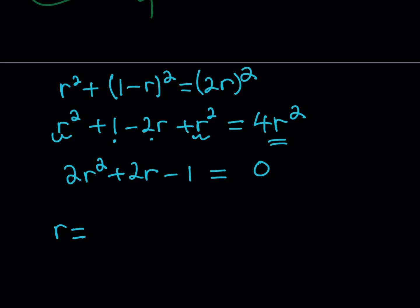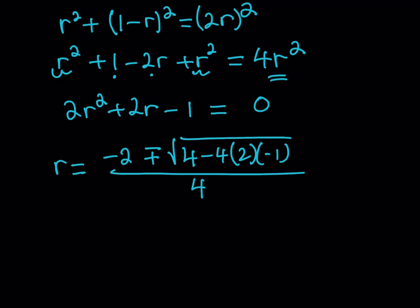So negative b plus minus the square root of b² which is 4 minus 4 times a times c. c is negative 1 so the product here is going to be a negative product because of the minus sign it is going to turn into a plus sign so we're going to be adding basically 4 plus 8 which is 12.